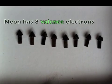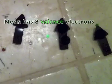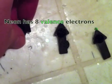Two electrons are still trapped inside that first shell. The remaining eight are called the valence electrons. Let's get two more electrons — they'll be hard to see on black, but they're there.